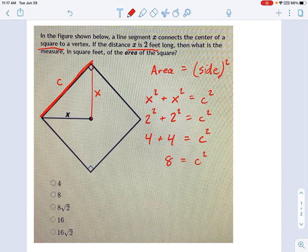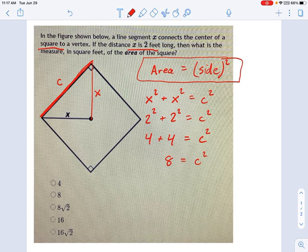Now, before you start taking the square root of c squared to figure out what the side length is, you could do that. But you would just be squaring it again, because I want the area. And the area is the side length squared, which we already have right here. So the area of this square is 8 square units.